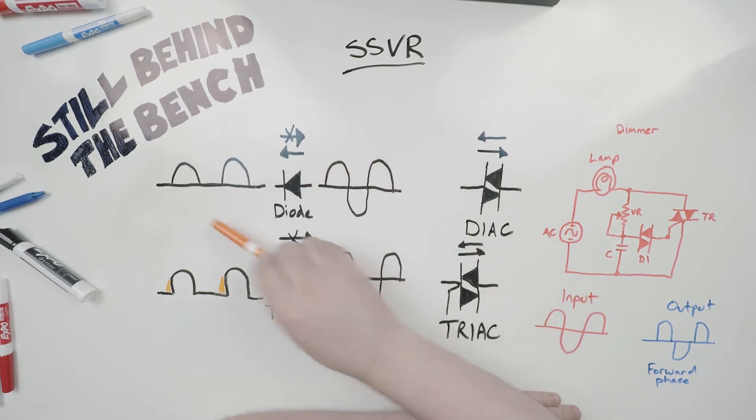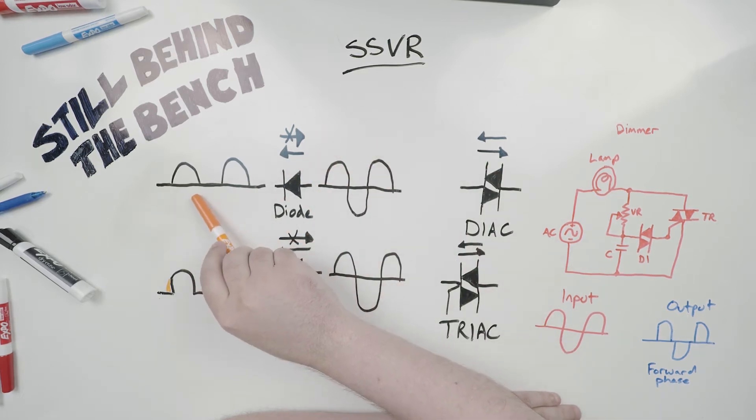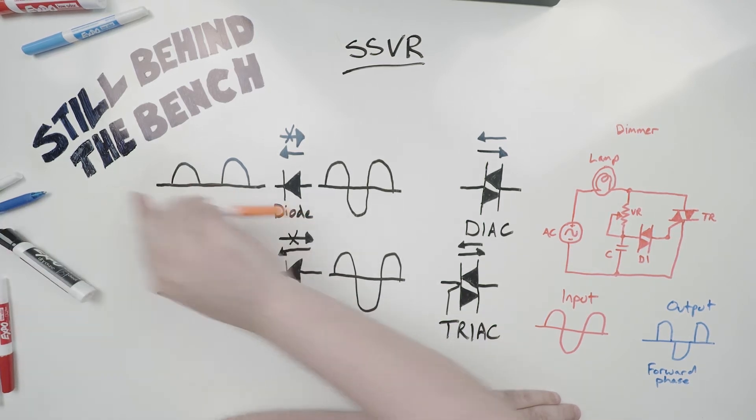This is your input. Then your output is going to have half the cycle removed because power can't flow back this way.